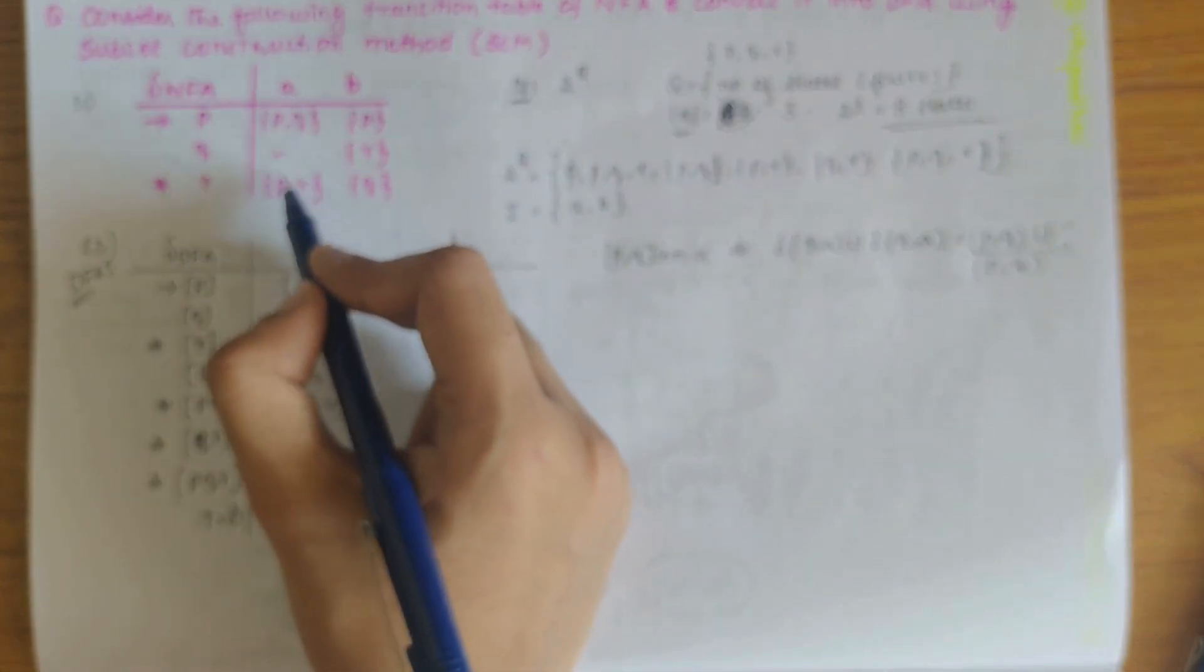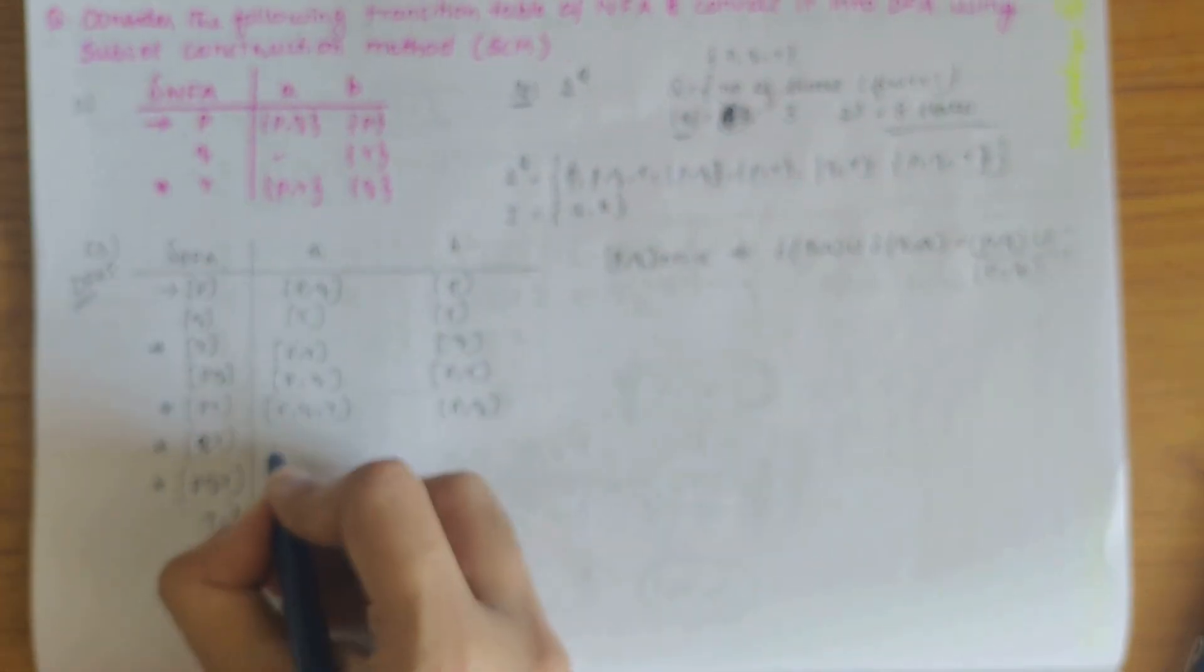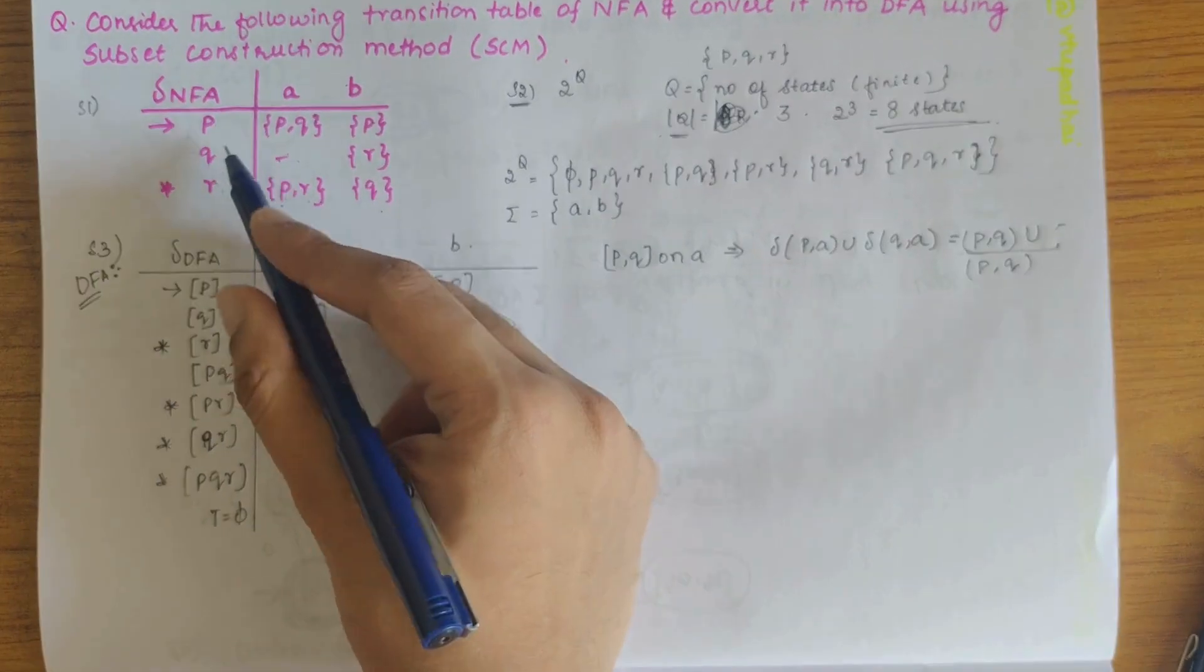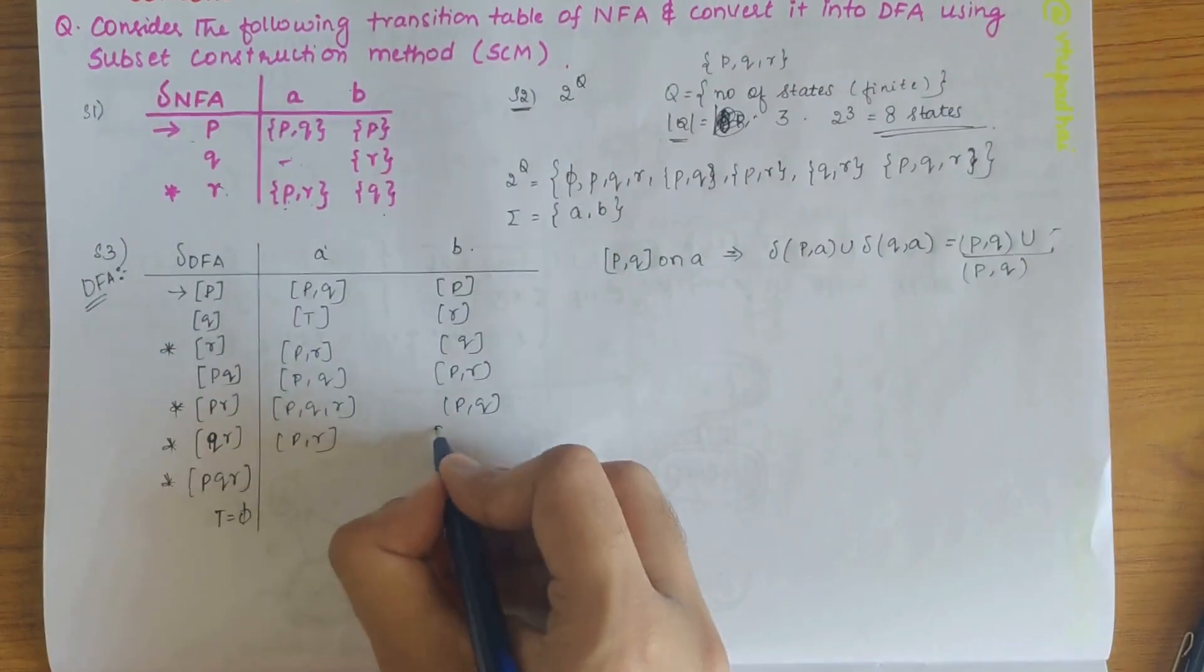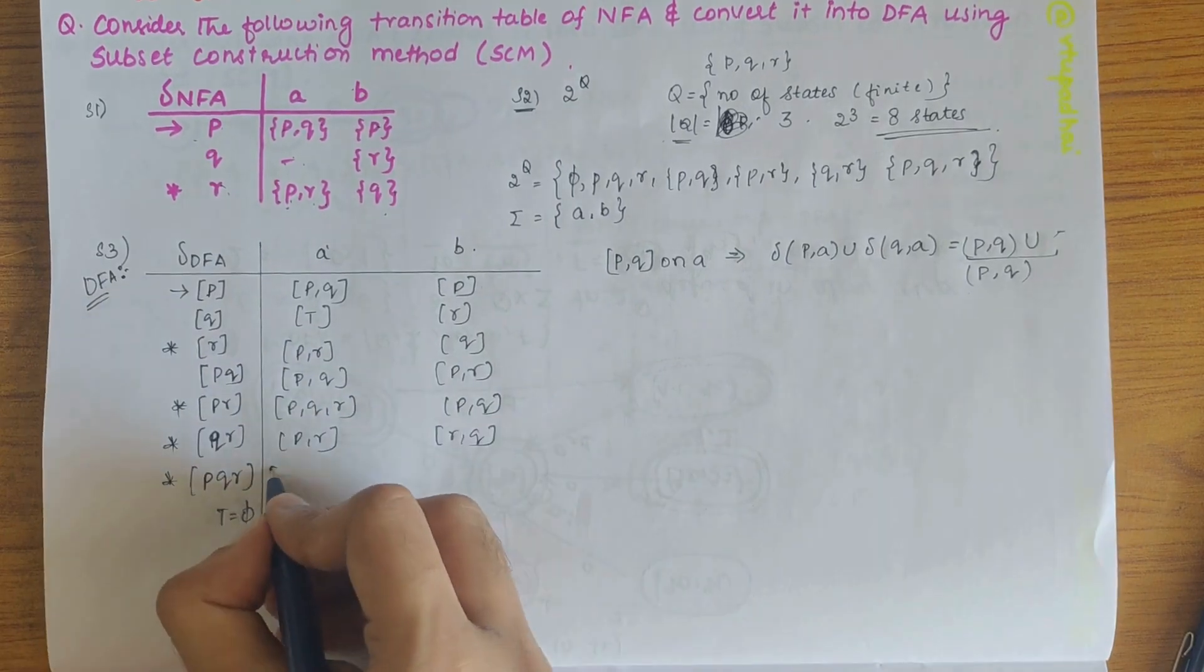qr, transition of q on a, there is nothing here and pr here, so it will be pr only. And qr on b, r and q.